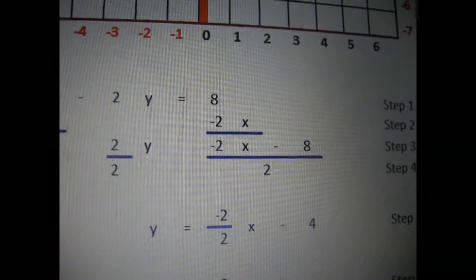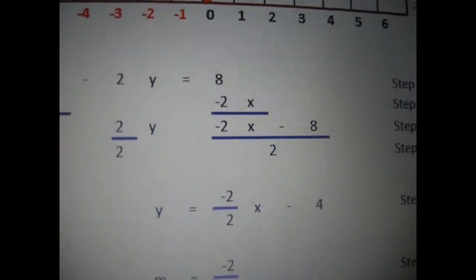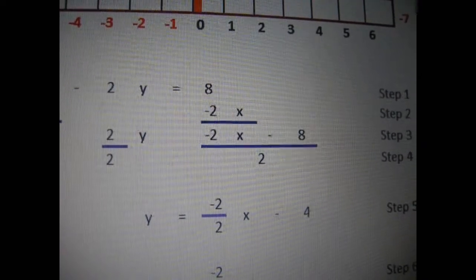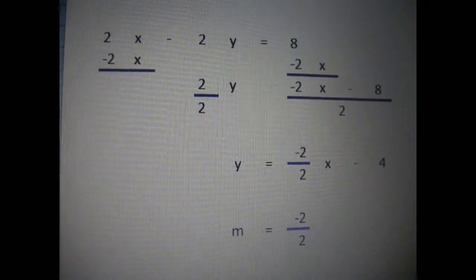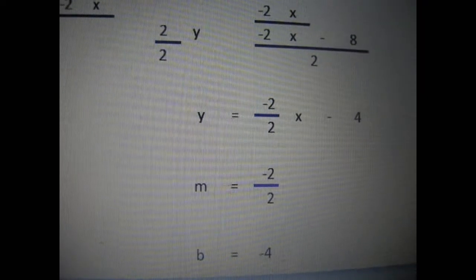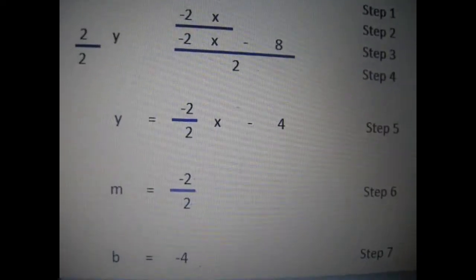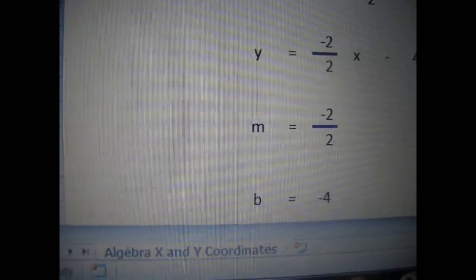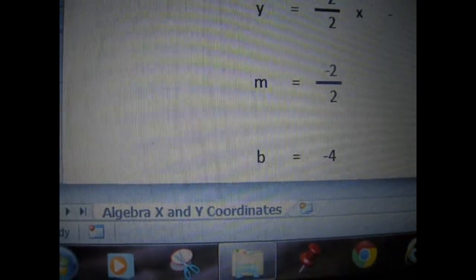And this one, under the 2x minus 8, we're going to always divide 2 into positive 8 leaves positive 4. So now we have y that we brought down equals negative 2 over positive 2 x minus 4. Now, m would equal the negative 2 over positive 2 and the b would equal negative 4, whatever's at the end.